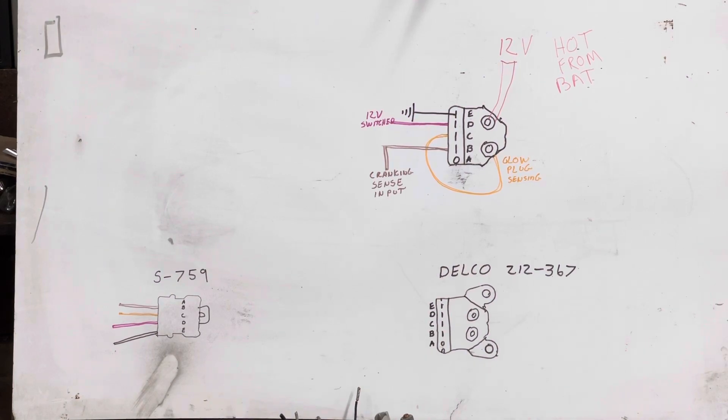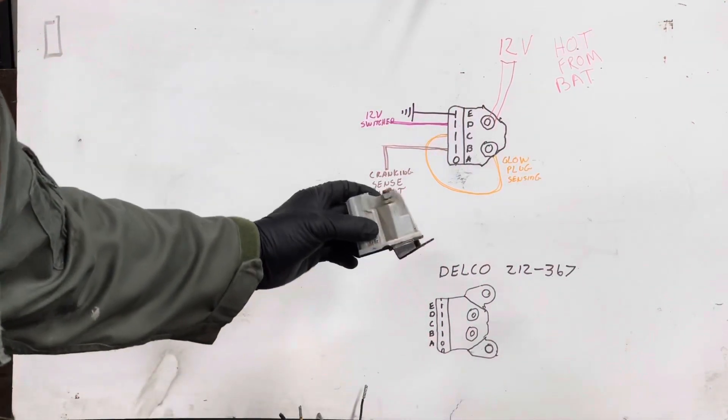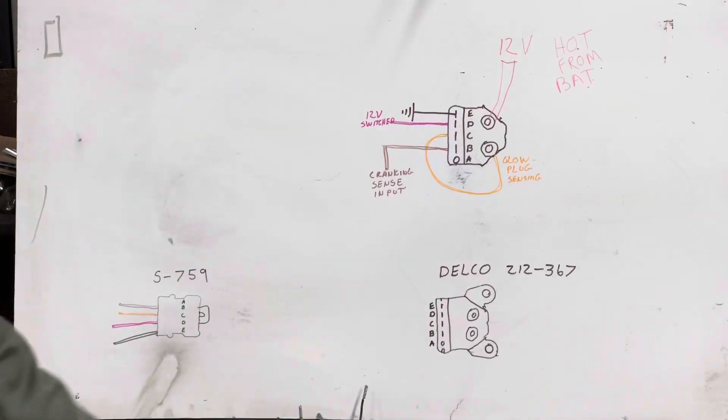So going junkyarding to find these things is a very good idea. Just get the gray one, don't get the black one, get the gray one. You see the wiring diagram, I think I left it up there for quite a few minutes, see how it goes. Any questions, write them in the comments.